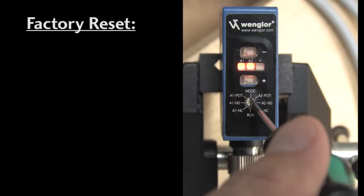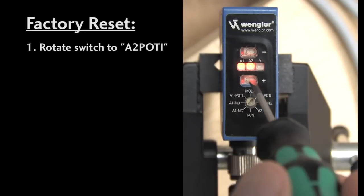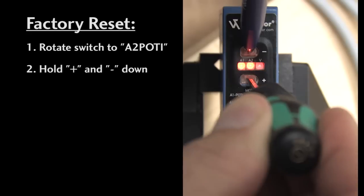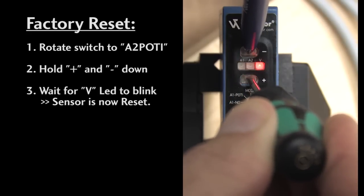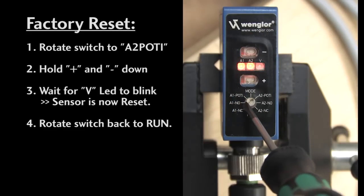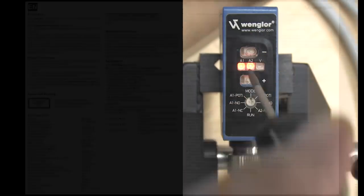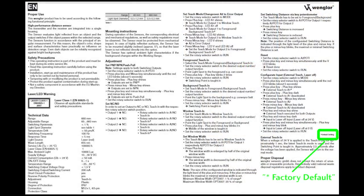To get the sensor back to factory reset, rotate the selector to the A2 POTI setting and hold down both the plus and minus keys until the red V LED blinks. Set the selector back to run and the sensor's reset to factory default. What are the factory defaults? Anything with an asterisk next to it on the product insert.